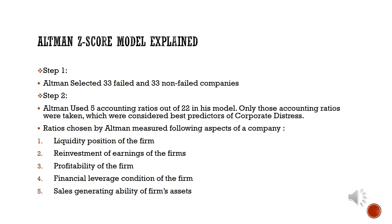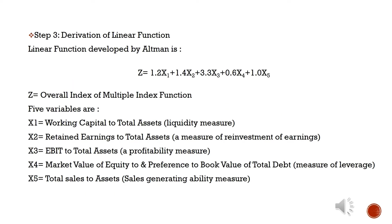These 5 ratios measure the following aspects of corporates: the liquidity position of the firm, reinvestment of earnings of the firm, profitability of the firm, financial leverage condition of the firm, and sales generating ability of the firm's assets. A linear function was developed with the help of these 5 accounting ratio factors.